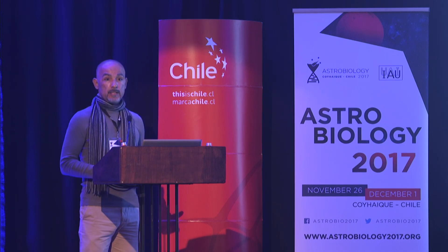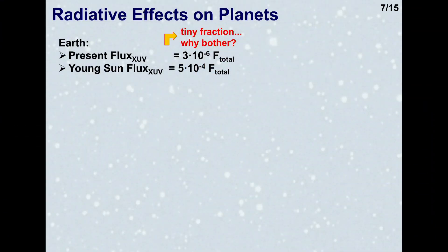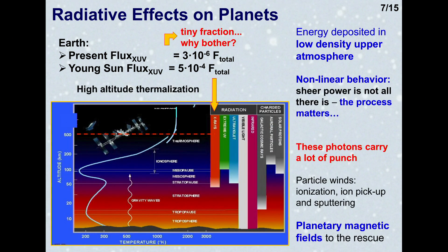What is the effect of this on planets? It's actually a tiny fraction of the total power, even for the very young sun. But these high-energy photons are heavyweights — they carry a lot of punch. They are injected into the low-density upper atmosphere and thermalized at high altitudes. It's not just a question of sheer power; the actual processes matter. Particle winds can erode the atmosphere, ionizing molecules and carrying them away. X-rays and extreme UV expand the atmosphere, so more of it lies beyond the protection of the magnetic field, and in some cases it can even pop out of the magnetic field and be eroded away by the solar wind. You need a planetary magnetic field to protect against these effects.